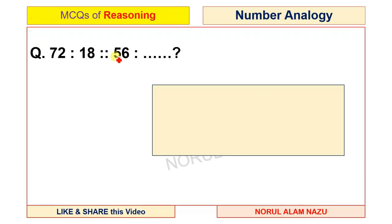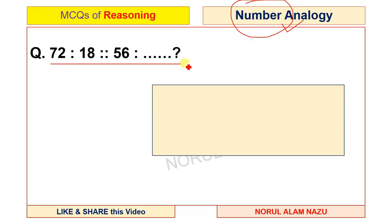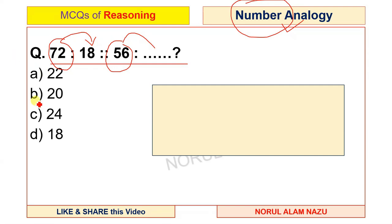This is 72 to 18, 56 to 5. This is the number of these questions. This is the series. These are the rules. I am going to talk about the rules: 22, 20, 24, 18. This is the rule — which goes wrong?